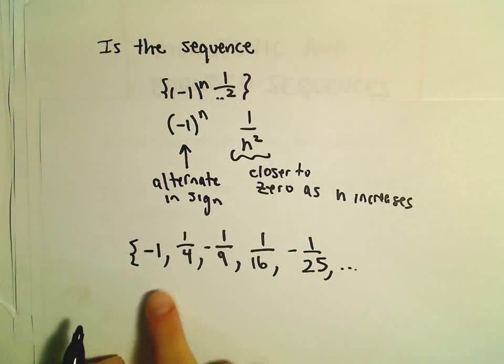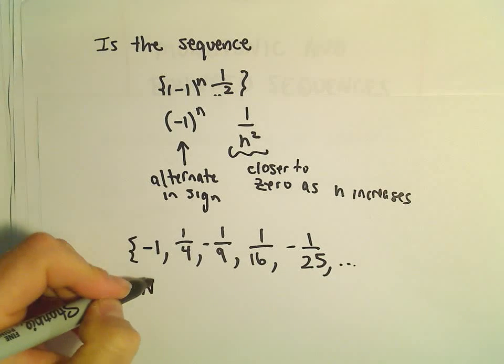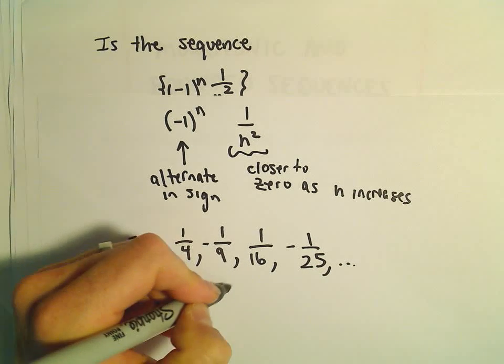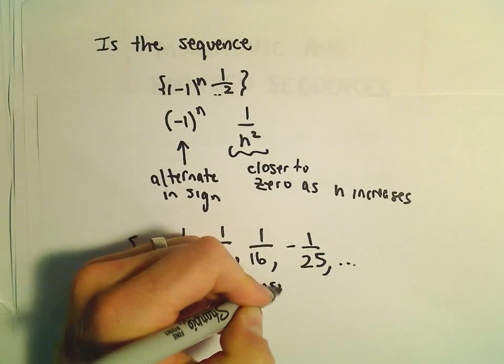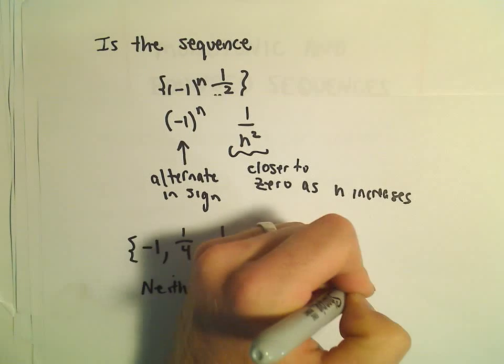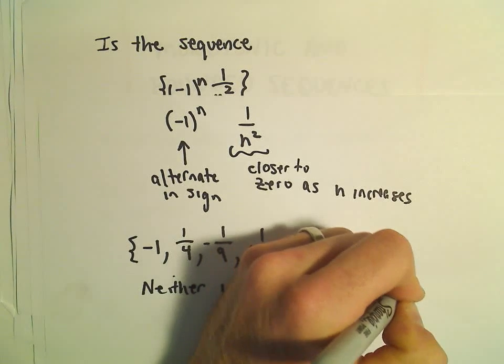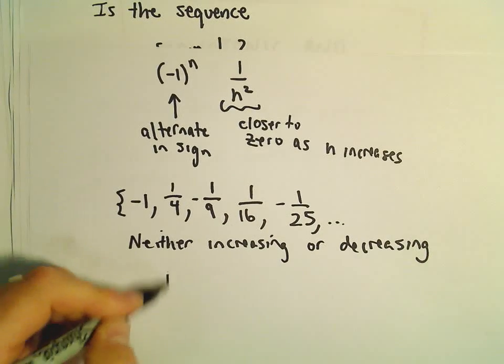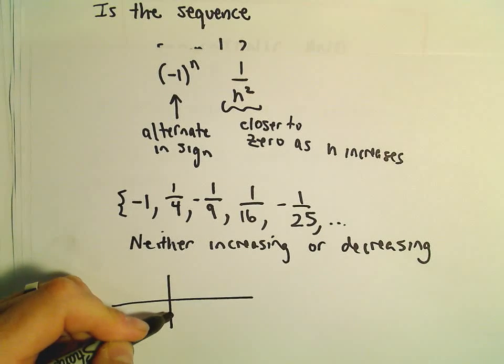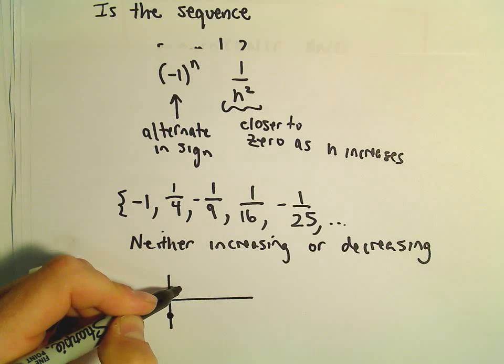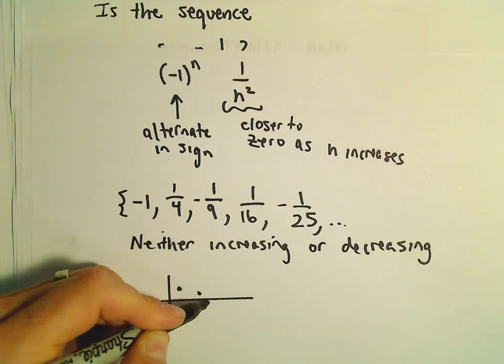So it's clear to see that this is neither increasing or decreasing. You're starting at -1, and then you're up at 1/4, negative 1/9, positive 1/16.